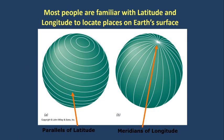Most people have heard of latitude and longitude and using them to locate places on the Earth's surface — the parallels of latitude and the meridians of longitude. The parallels of latitude, as the name suggests, are a series of concentric circles that are parallel to each other. The largest circle is the equator, and the circles get smaller as you move north towards the North Pole or south towards the South Pole.